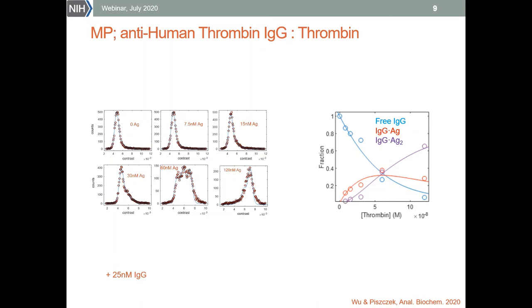As you can see, the fit is quite good. We see the decreasing population of the free antibody, an increasing concentration of the two-to-one complex, and the one-to-one complex that initially increases to reach a maximum and then decreases when the antibody is saturated with the antigen.